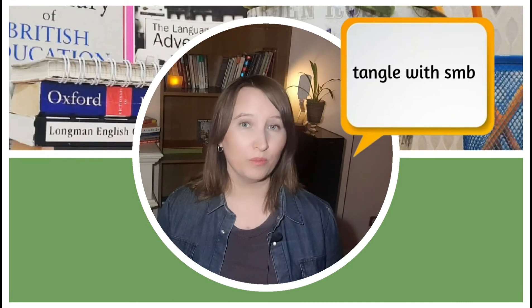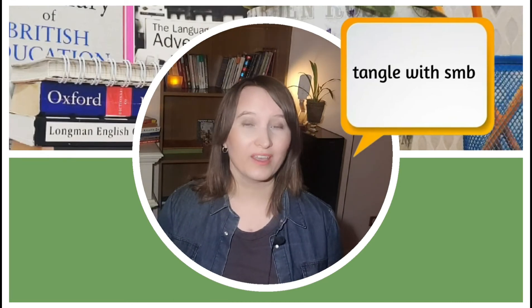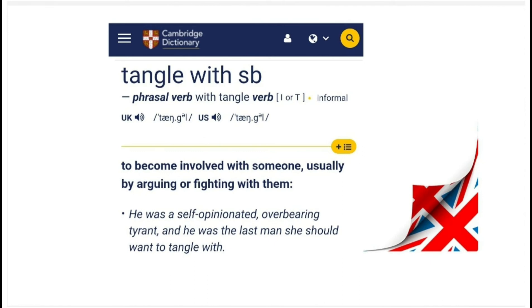The last one is a phrasal verb: to tangle with somebody. If you say 'I don't want to tangle with this person,' it means you don't want to start an argument or a fight with them. You don't want any contact that may lead to a conflict.